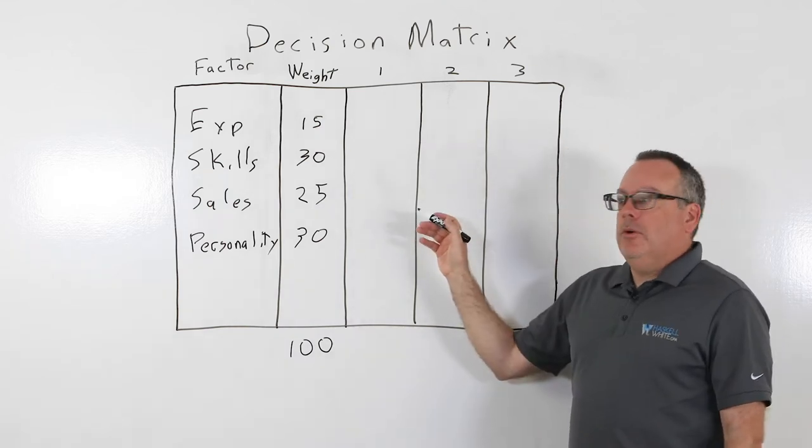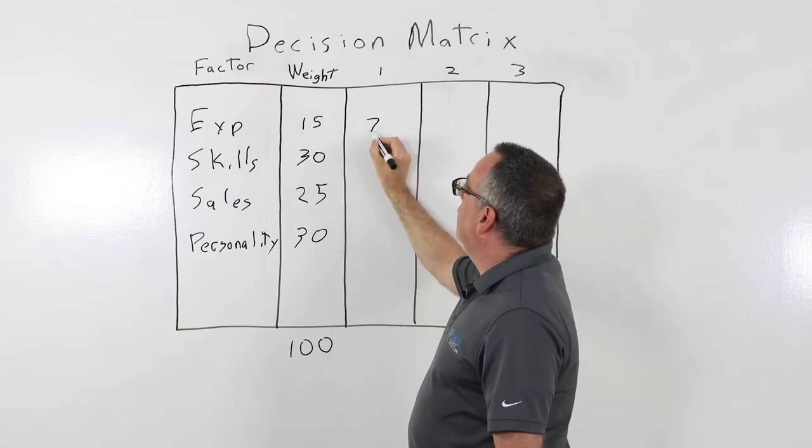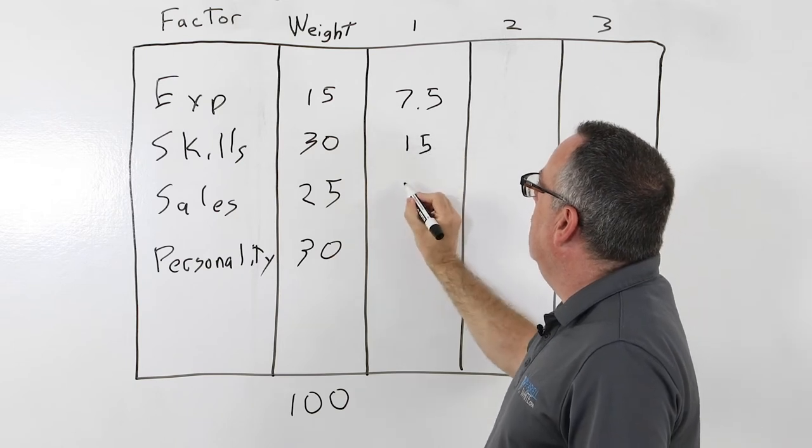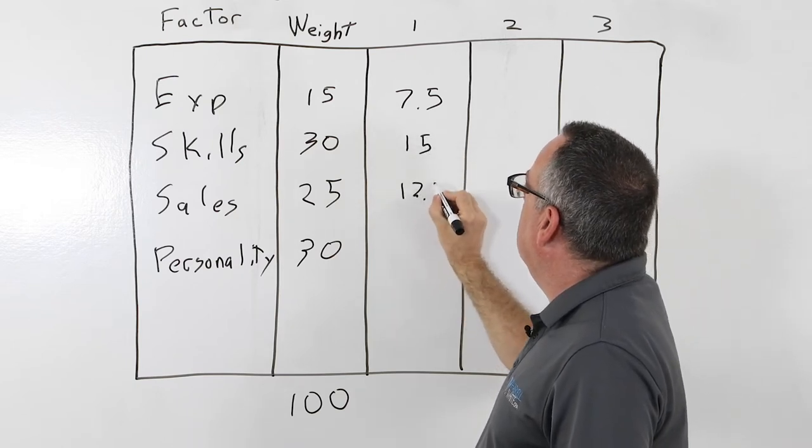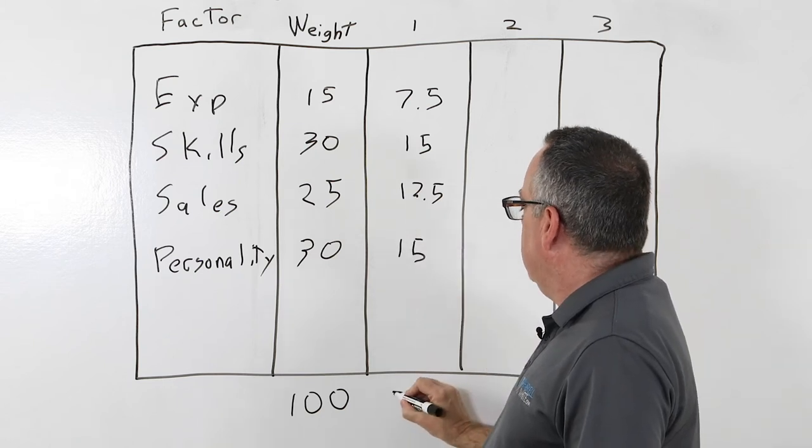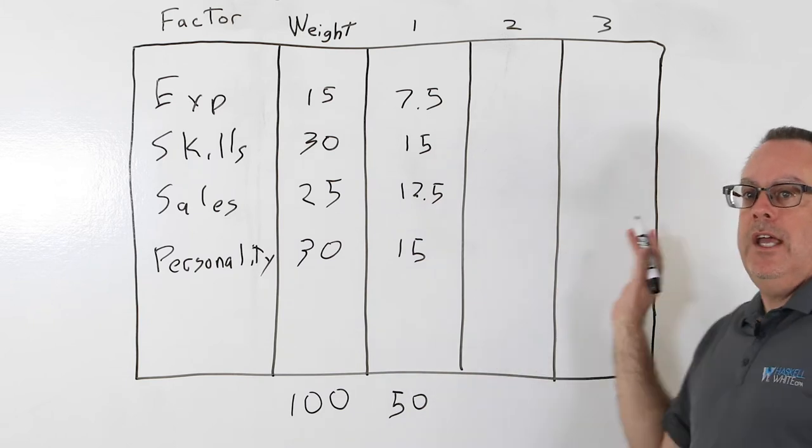Now the first candidate, which we want to do, is we want to give them one half of the rating of each one of those factors. So this one would be 7.5, the skills would be 15, this would be 12 and a half, and the personality would be 15. So make sure that equals 50, and that's going to be our benchmark that we're going to weigh the other candidates against.